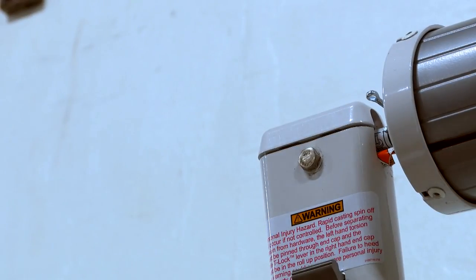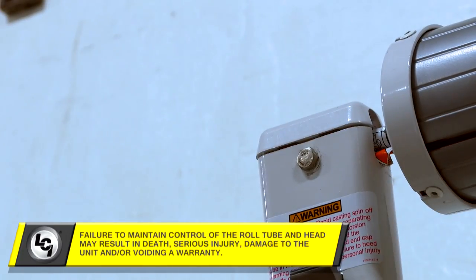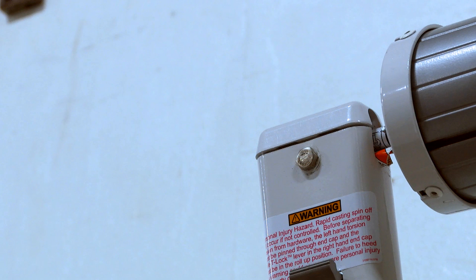Pull the cotter pin from the idler side end cap, making sure to keep a firm hold on the roll tube to avoid injury or damage to the unit. Pulling the cotter pin allows the roll tube to turn for easier installation of the drive head.